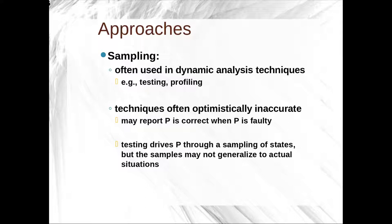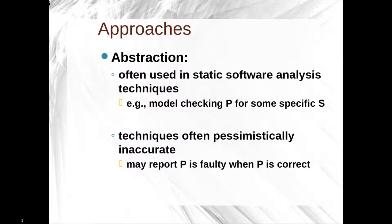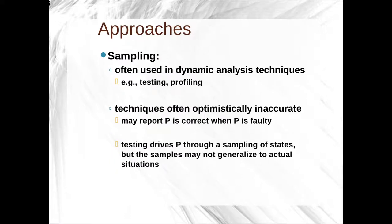These sampling techniques are usually optimistically inaccurate. They may report that your program P is correct when P is, in fact, faulty, because the tests didn't cover faulty test cases. Furthermore, testing might not generalize to how the program is actually used — the tests might be naive about real-world use. Abstraction covers things like static analysis and type systems. Sampling covers things like choosing random tests, writing tests, having a set of tests, profiling software, measuring it, but not necessarily being able to measure all executions.